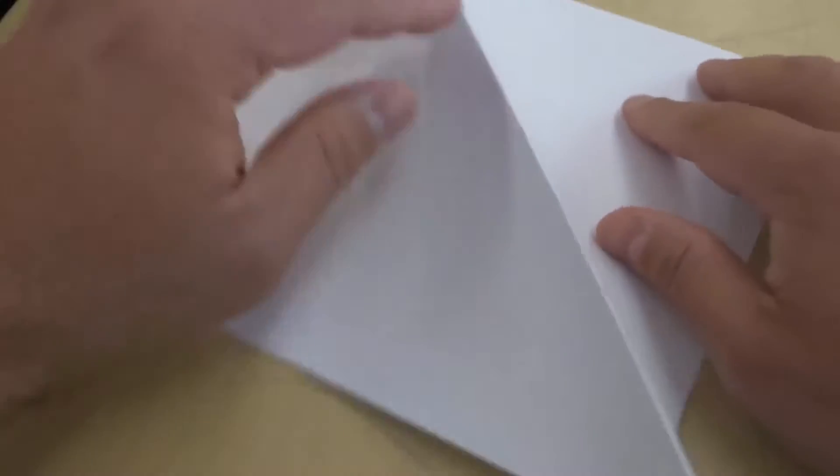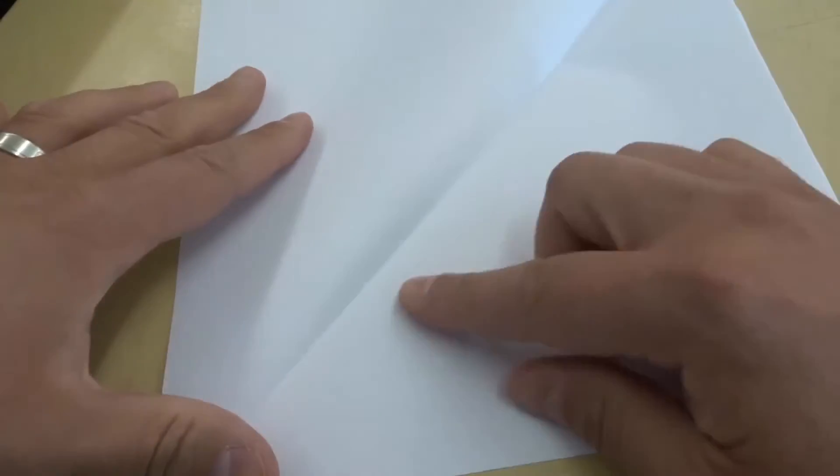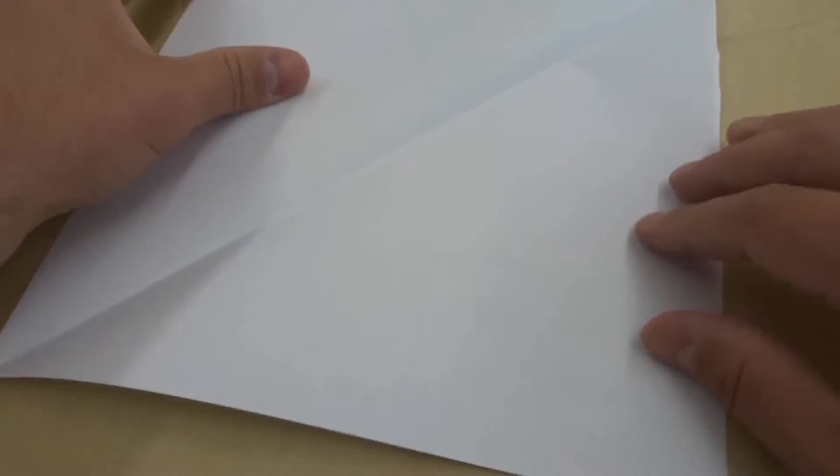It's very easy to make. What you want to do is start off with a square sheet of paper. Now I've actually taken a rectangular sheet of paper and converted it to a square as you can see right here. When you have your square sheet of paper, make sure it's a perfect square.